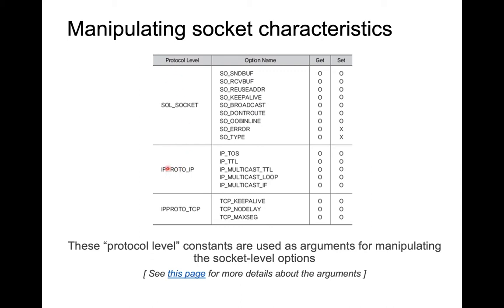At each level we can either get the value of the socket or set the value of the socket. Set means you can change the pre-existing value according to your will, and get means there is some value and you want to see what it is and you can retrieve it.